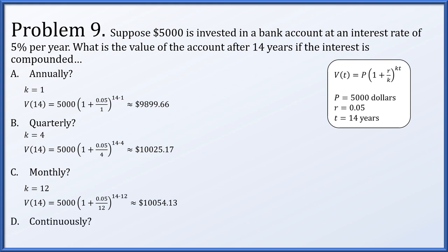What if we compound continuously — not monthly, not daily, not hourly, but every second and beyond? For continuous compounding, we use the simpler formula: the value after t years is the principal p times e to the rt. With t equal to 14, r equal to 0.05, and principal 5,000, we compute and get $10,068.76.